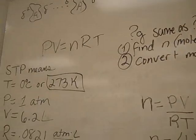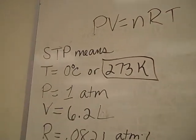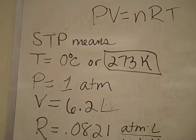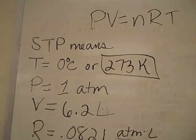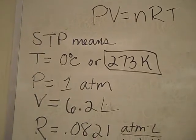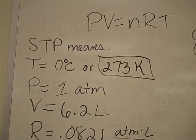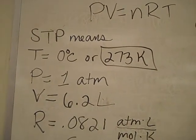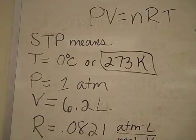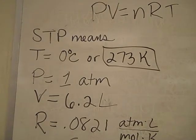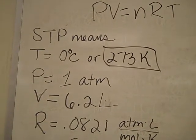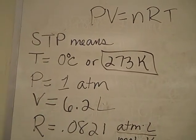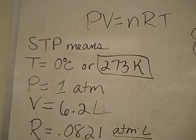So let's start with the longer way. Standard temperature and pressure means 0 degrees Celsius, or if you add 273 to it, you have 273 Kelvin. We wouldn't want room temperature for standard temperature because everybody's room is a different temperature, but something like 0 degrees Celsius we can keep standard. Our pressure at STP is always one atmosphere.